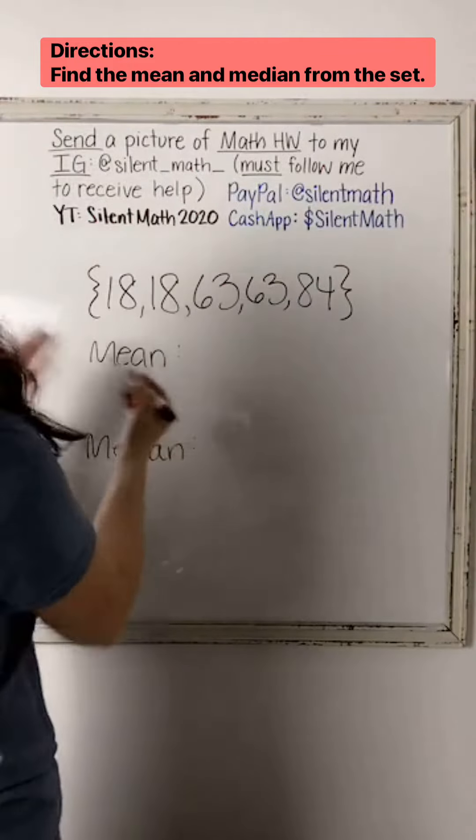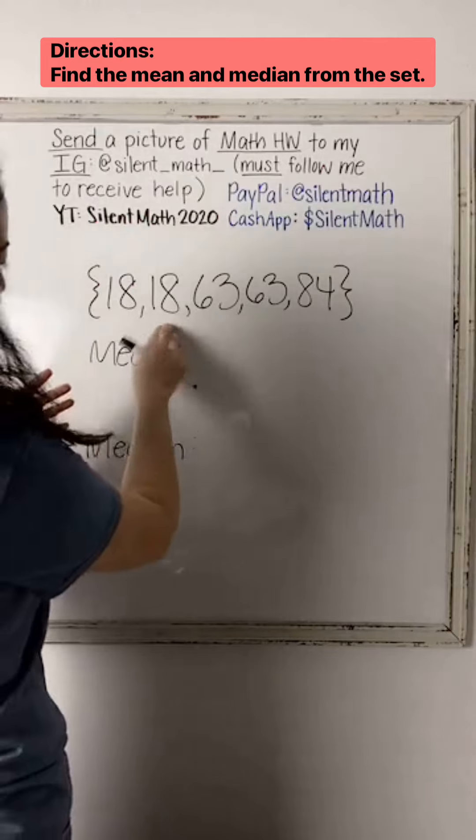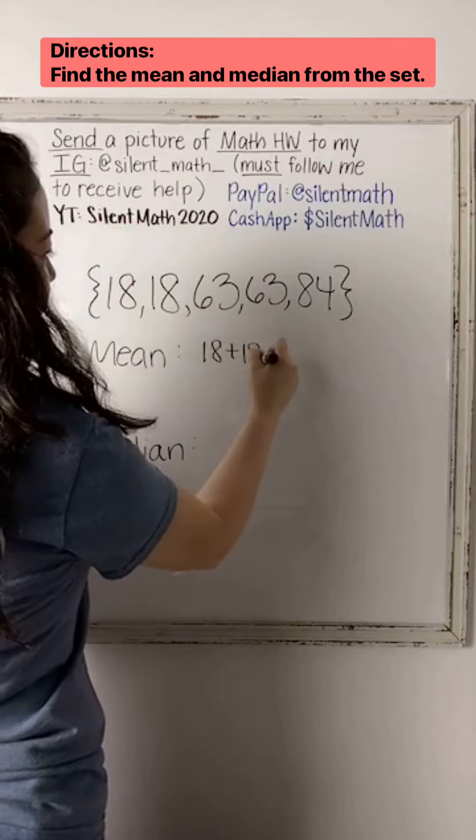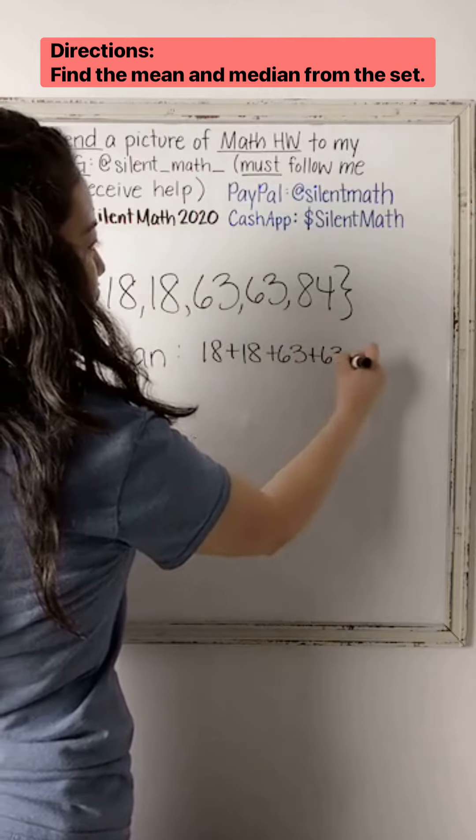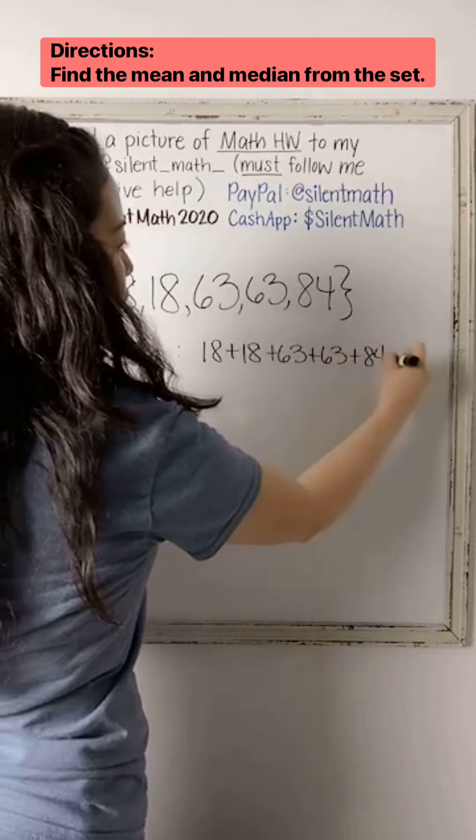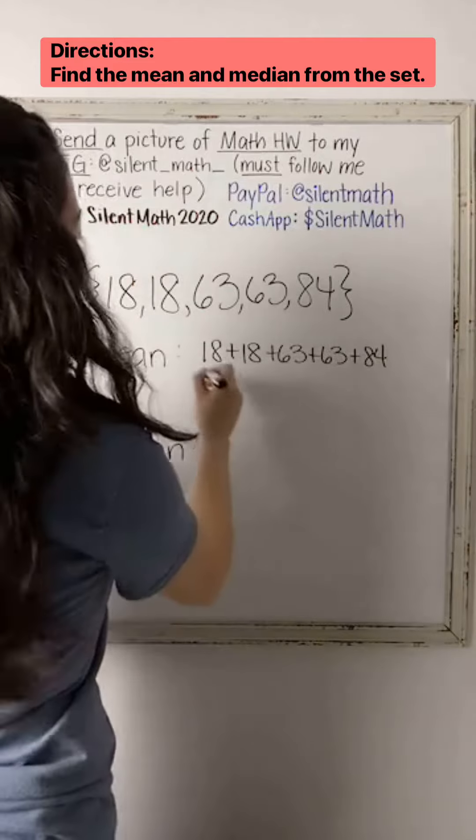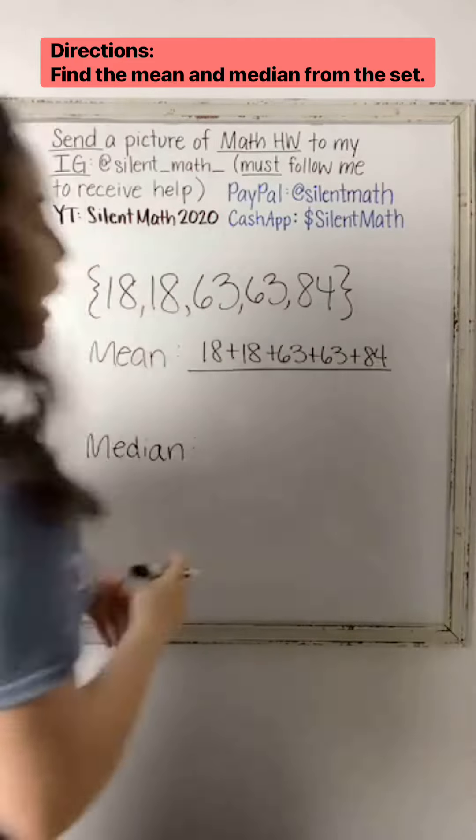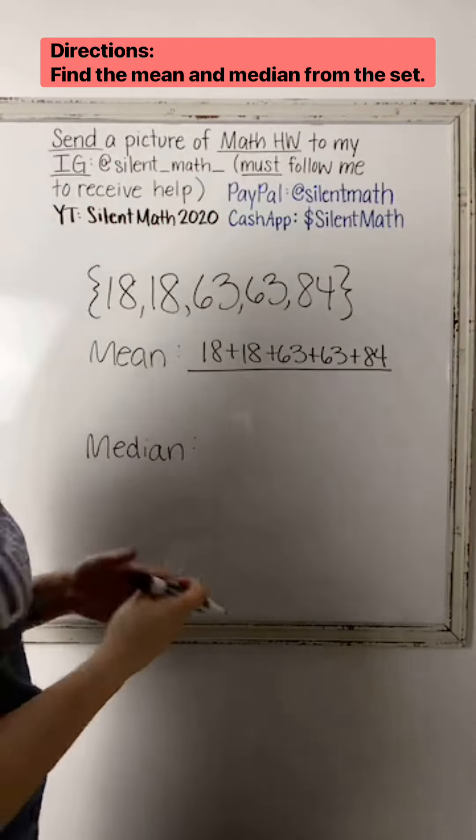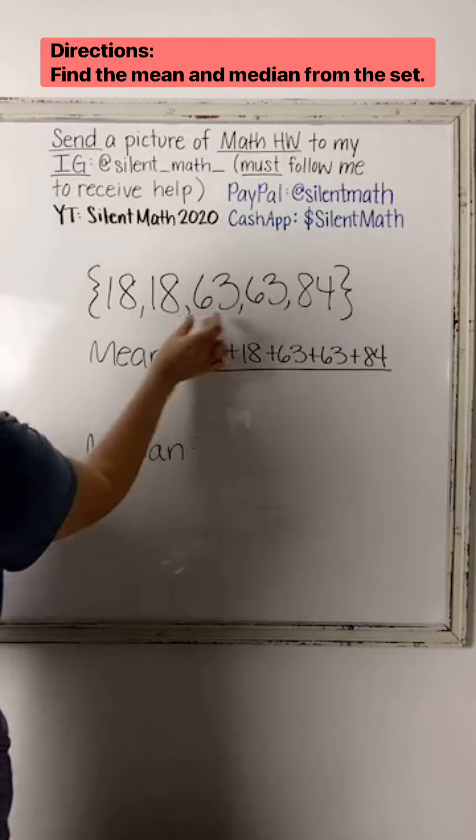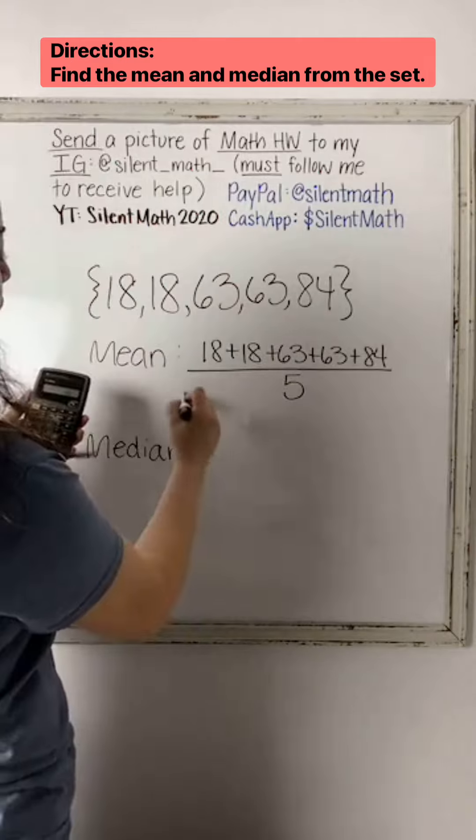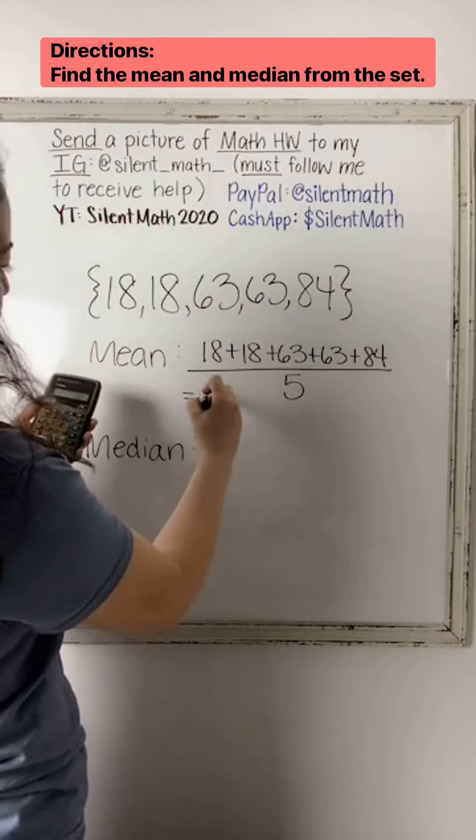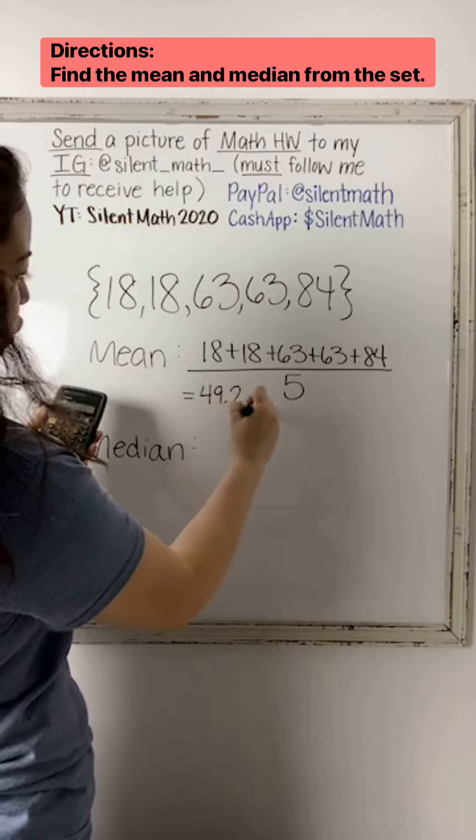So again, mean equals 18 plus 18 plus 63 plus 63 plus 84. And then we're going to divide it by how many terms we have in that series. We had 1, 2, 3, 4, 5. This ends up equaling 49.2.